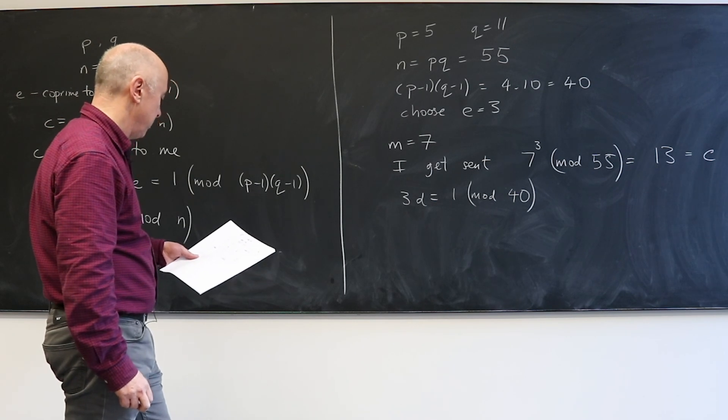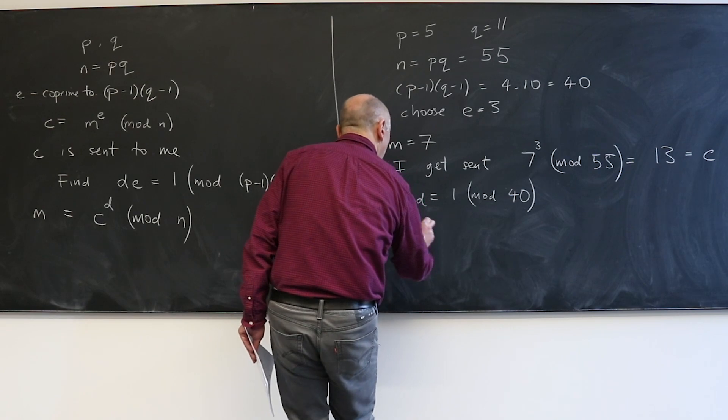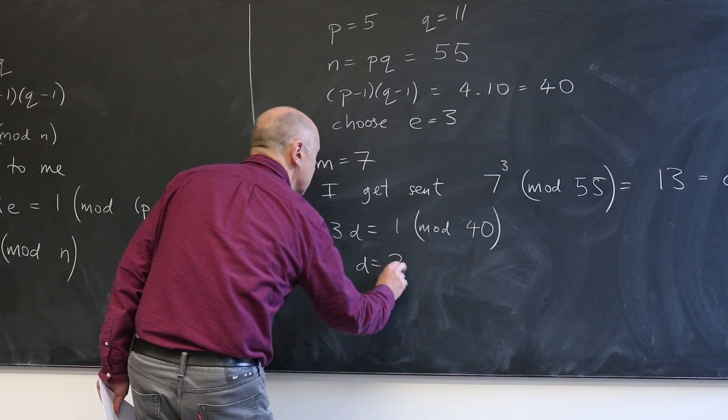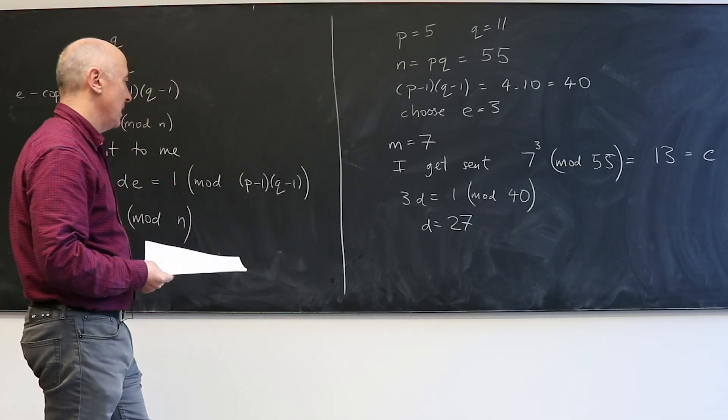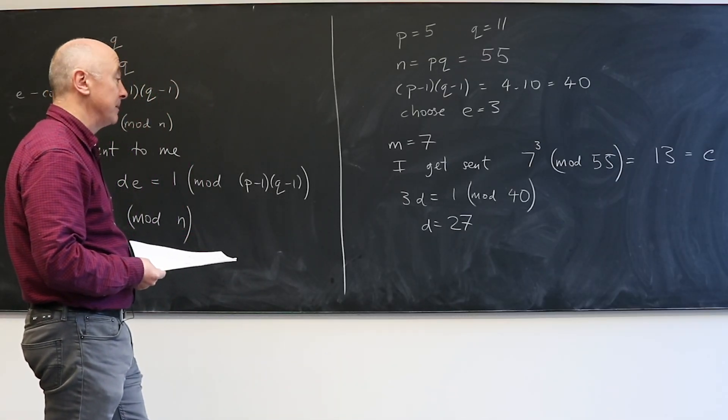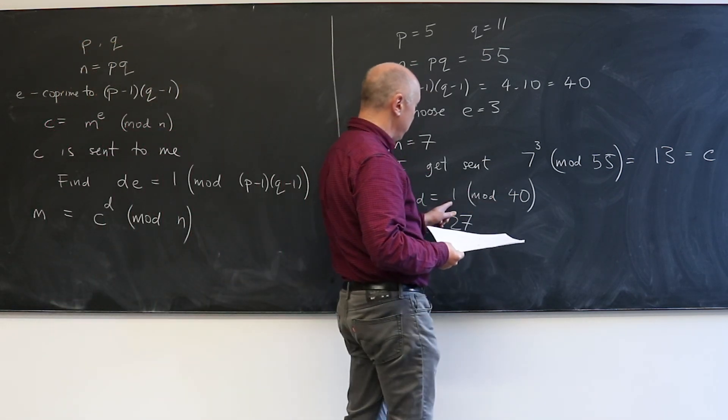So I need to find a number D which if I multiply it by 3 is a multiple of 40 plus 1. And the answer is quite simple. D is 27. So if I get 27 and multiply it by 3, I get 81, and that's twice 40 plus 1.